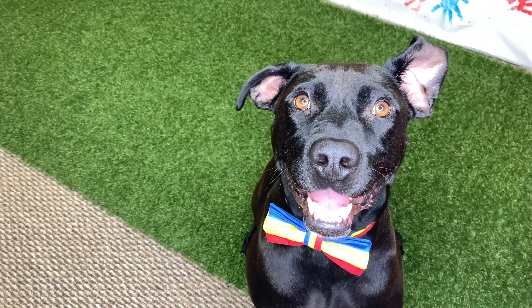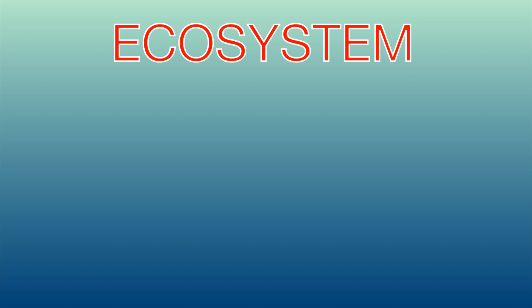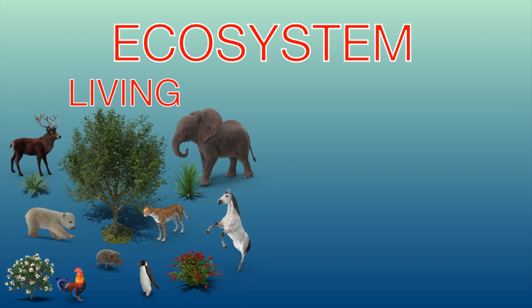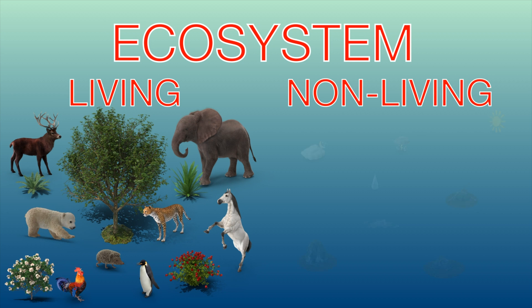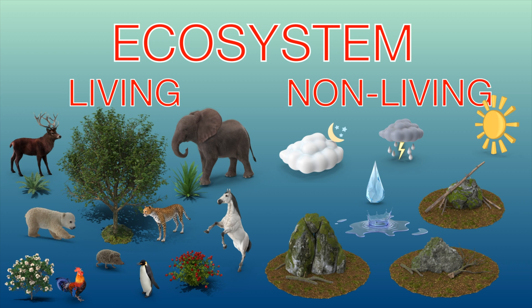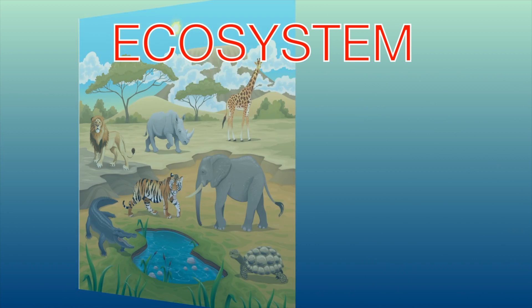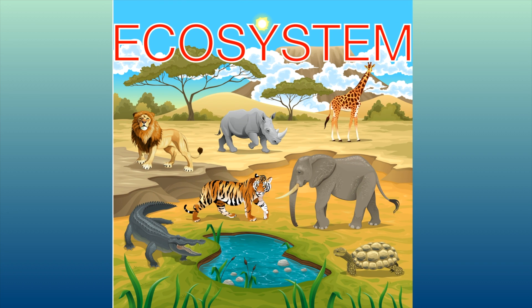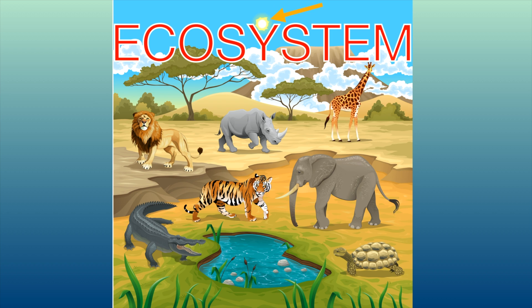Wait a minute, what exactly is an ecosystem? An ecosystem is a group of both living and non-living things that live in the same area and interact with each other. Let's go back to Diggy Dog's picture — oh yeah, this is definitely an ecosystem! There are living things like animals and plants, and non-living things like the sun, water, soil, and rocks, and all of these things live and interact together. That is so cool — what an amazing ecosystem!